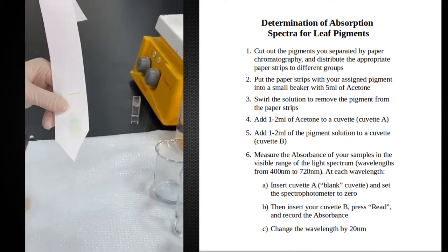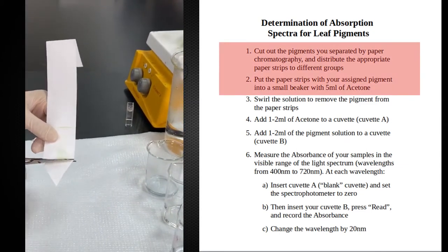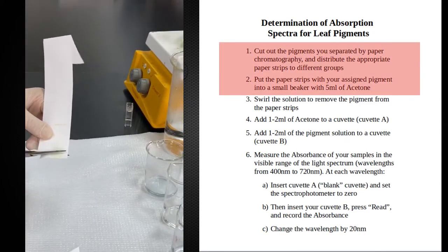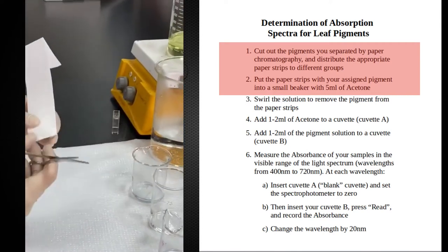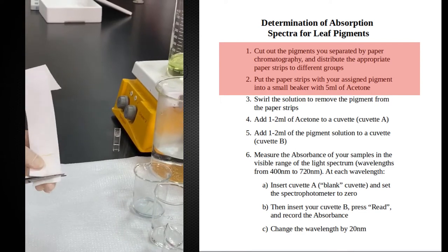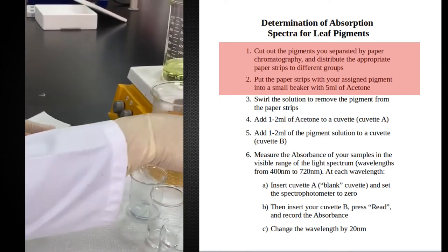What I have to do now is separate those different pigments from each other and re-suspend them in acetone. So this is chlorophyll A. I'm putting them in beakers. Each of those beakers contains 5 ml acetone.